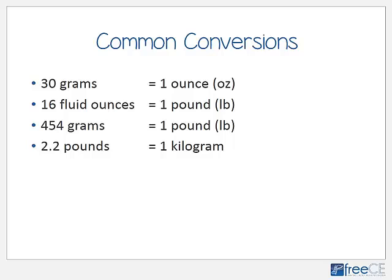It's also important to be able to convert between liquid and solid measurements. We estimate about 30 grams in every fluid ounce — just as there are 30 milliliters in one ounce. Remember this is an estimate; the actual conversion is closer to 28 grams per ounce, but in pharmacy practice we use the estimate of 30 grams much more often.